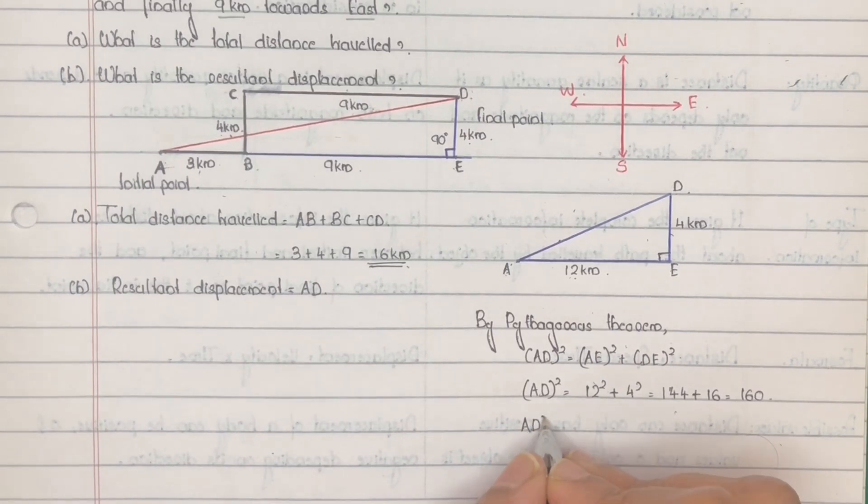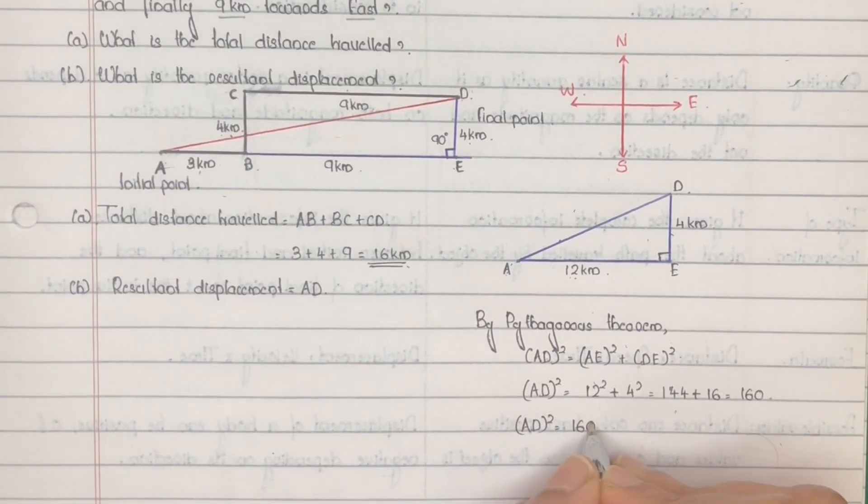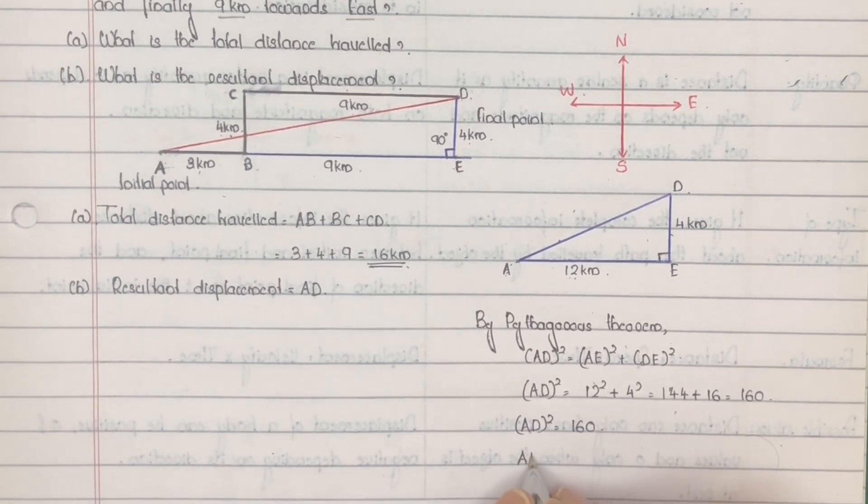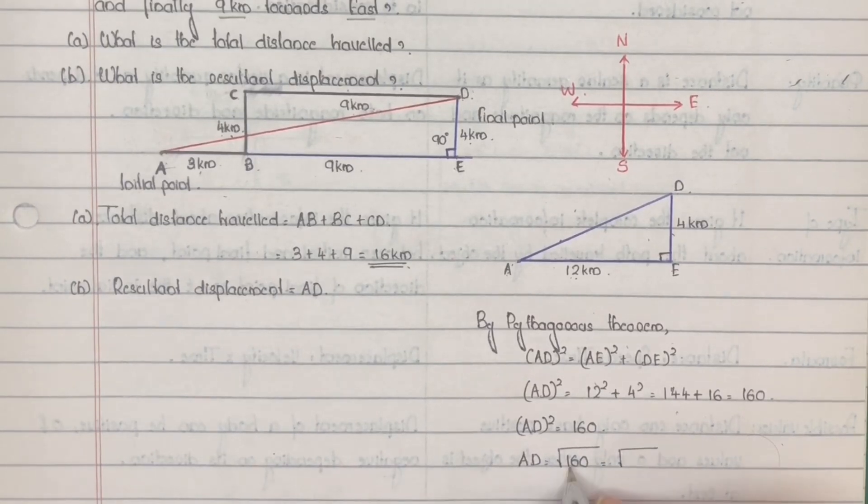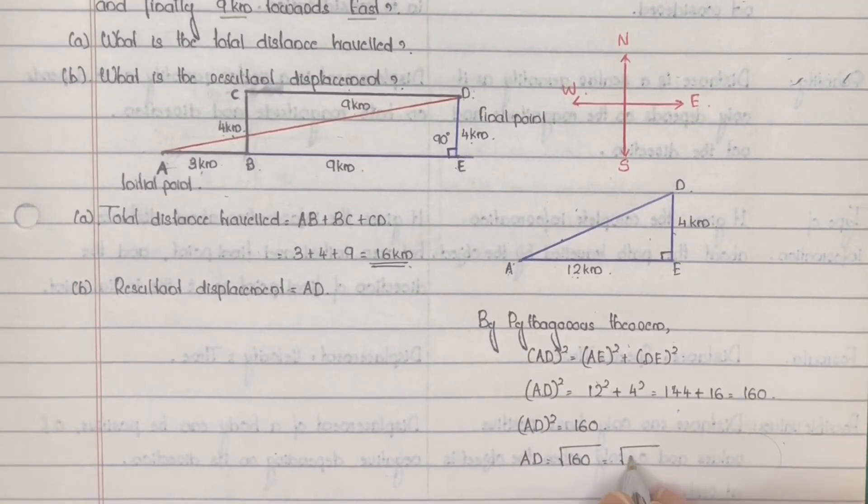That is AD² is equal to 160. So AD is equal to √160. You can split it as 16 into 10.